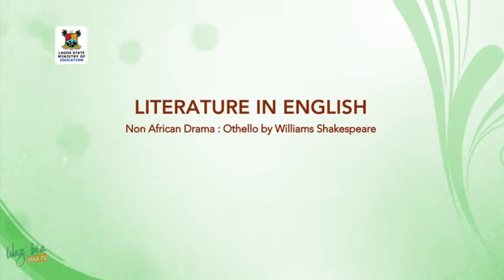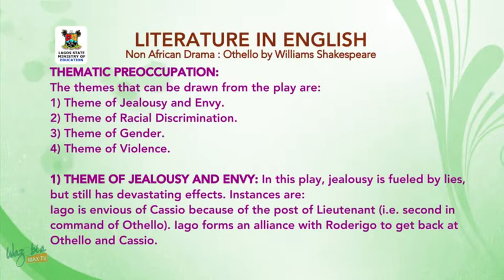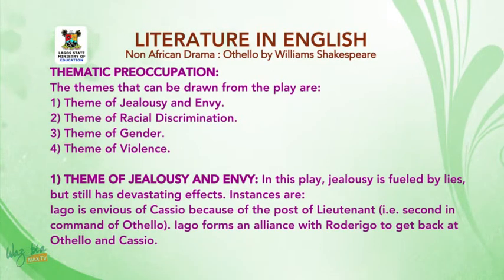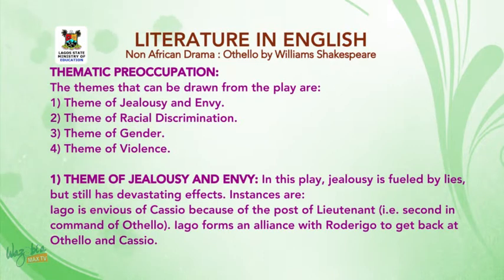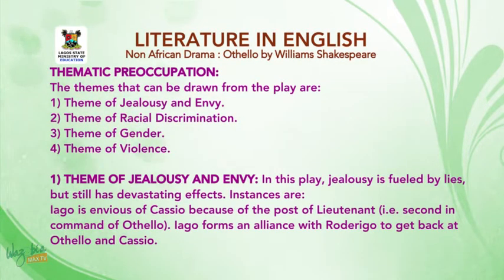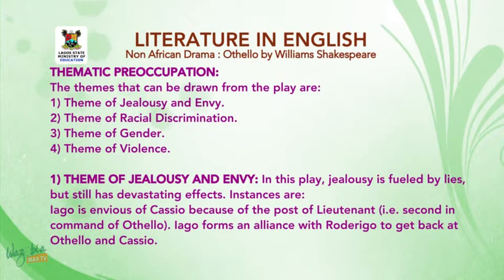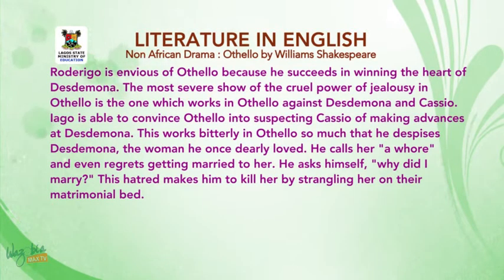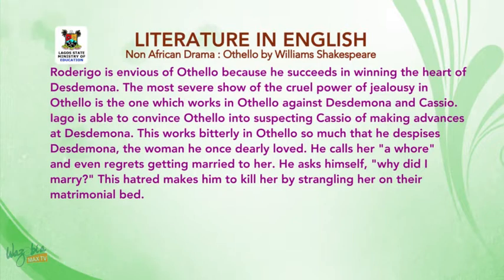Welcome back to the second segment of today's lesson as we go on to discuss the themes. The themes that can be drawn from the play are: number one, the theme of jealousy and envy; number two, the theme of racial discrimination; number three, the theme of gender; number four, the theme of violence. Regarding jealousy and envy — in this play, jealousy is fueled by lies but still has devastating effects. Iago is envious of Cassio because of the post of lieutenant. Rodrigo is envious of Othello because he succeeded in winning the heart of Desdemona. The most severe show of jealousy in Othello is the one which works in Othello against Desdemona and Cassio.